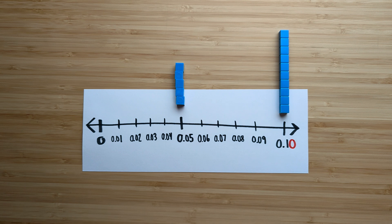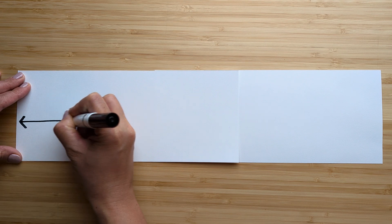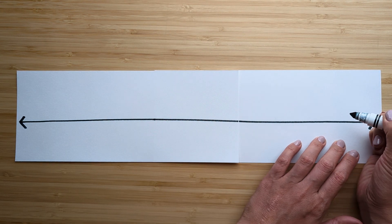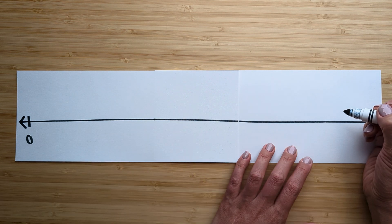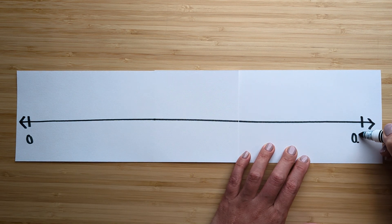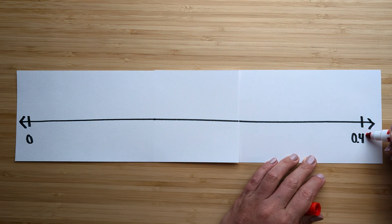Let's make one more number line to practice comparing decimals. All right, this number line is going to be a little bit longer. And we're going to go from zero to four tenths.